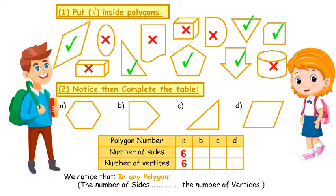Polygon B: The number of sides — 1, 2, 3, 4, 5 — it has 5 sides. The number of vertices — 1, 2, 3, 4, 5 — it has 5 vertices.